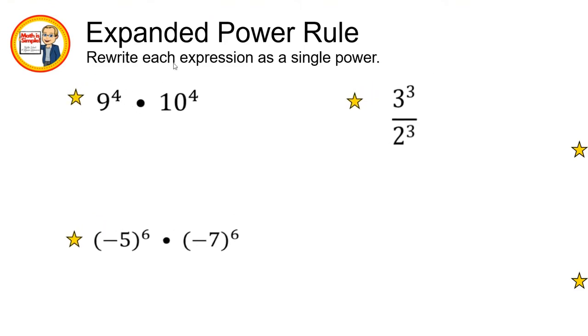The first example we see that we have nine to the fourth power times 10 to the fourth power. Now by having the exact same powers, all I need to do is combine nine times 10 and I can raise the entire thing to the fourth power. This would give us 90 to the fourth power.